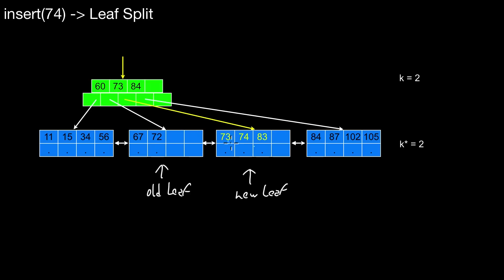If there is space between the left boundary and the right boundary, you can use a different pivot somewhere in the middle. But in this situation we really have to use 73. Since we used 73 and then want to insert 74, it's clear that the new key 74 must be inserted into the new leaf — if inserted into the old leaf, it wouldn't be found in a later search operation.